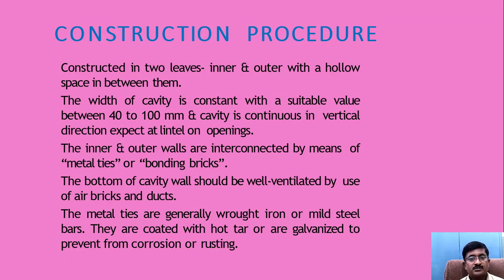Construction procedure: construction in two leaves — inner and outer — with a hollow space between them. The width of the cavity is constant at a suitable value between 40 to 100 mm, and the cavity is continuous in the vertical direction except at lintels and openings. The inner and outer walls are interconnected by means of metal ties, bonding rings, or bonding bricks. The bottom of the cavity wall should be well ventilated by use of air bricks and ducts. The metal ties are generally wrought iron or mild steel bars, coated with hot tar or galvanized to prevent corrosion or rusting.